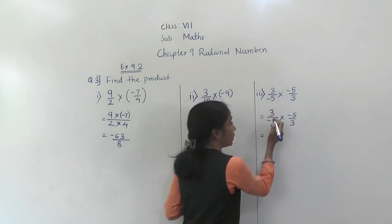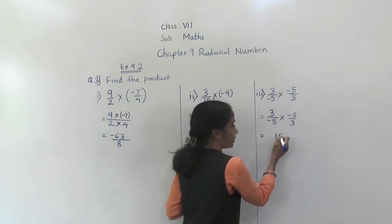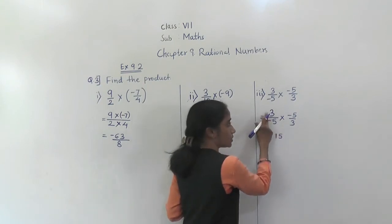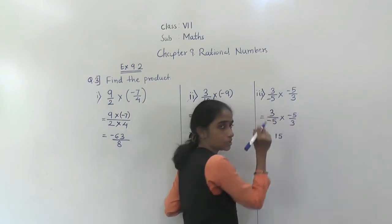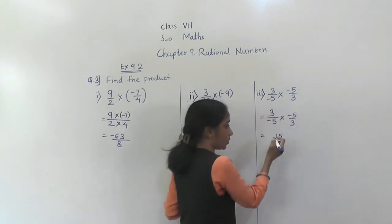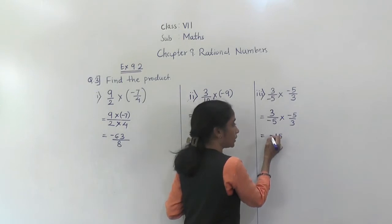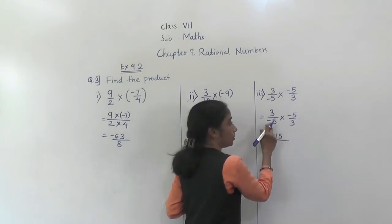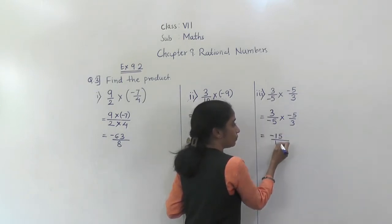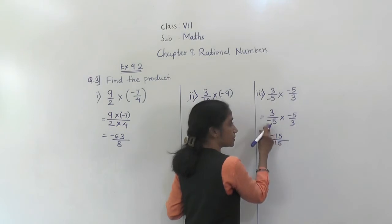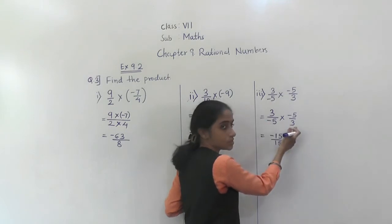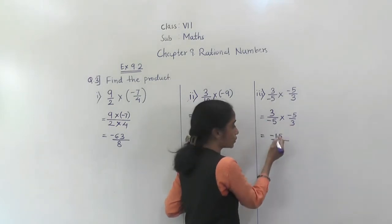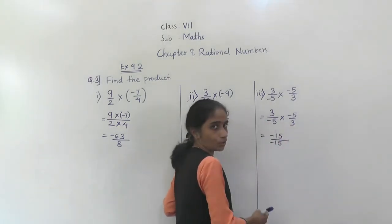I will show you. 3 into 5 is 15. This is positive, this is negative, so their product will be negative. 5 threes are 15. This is negative, this is positive, so their product will be negative.